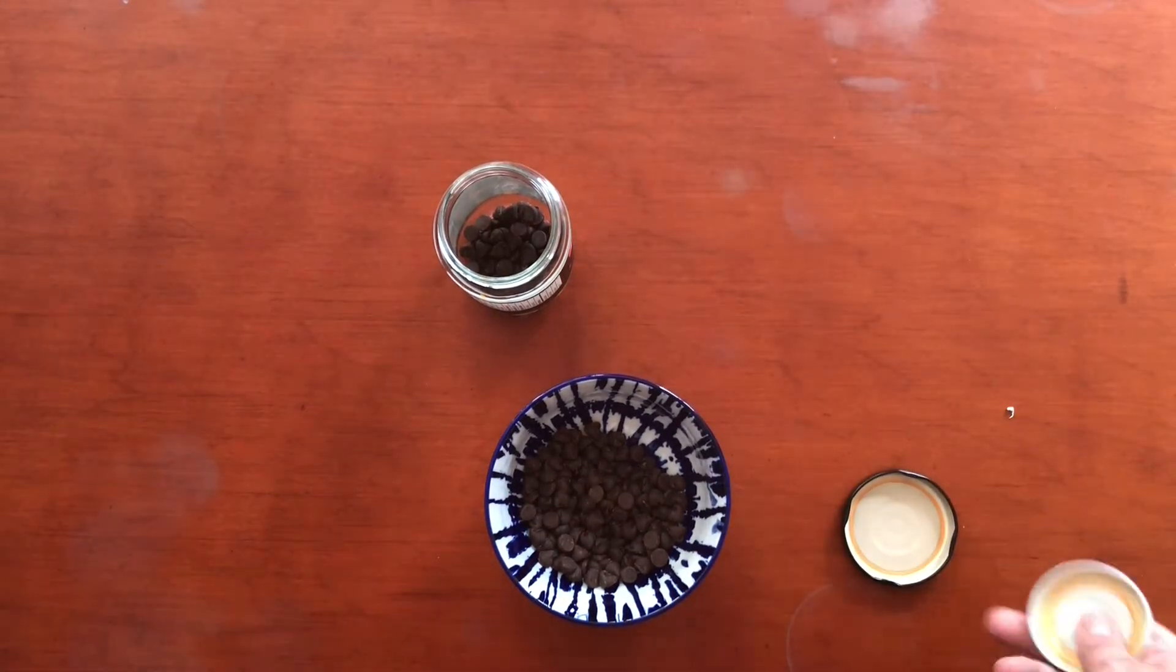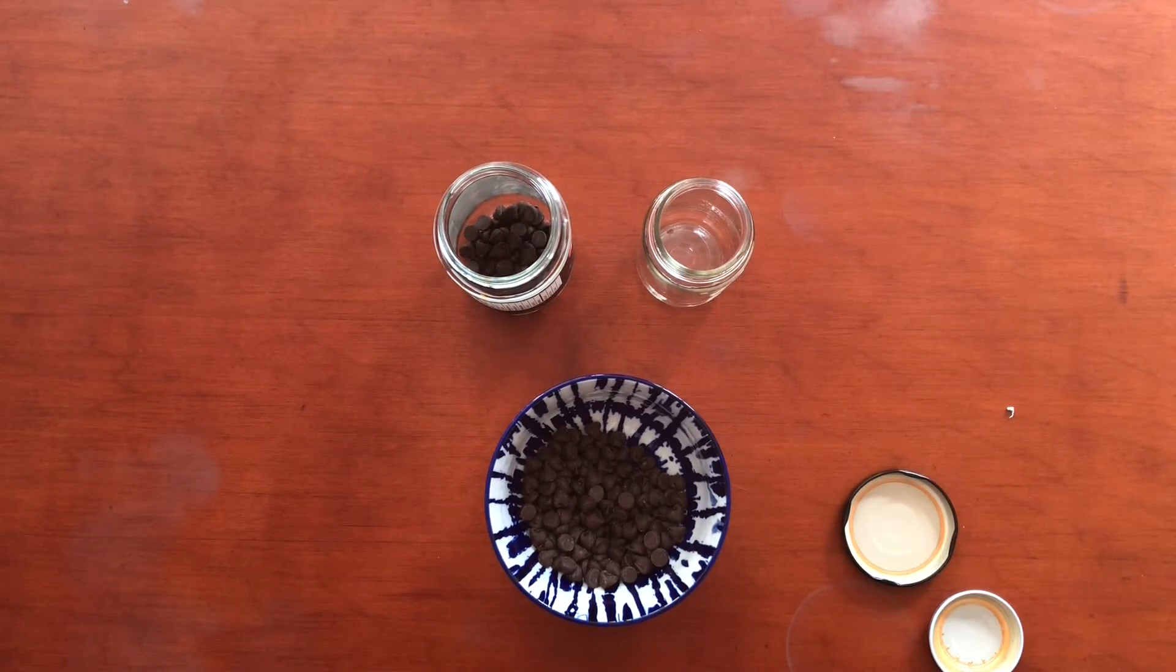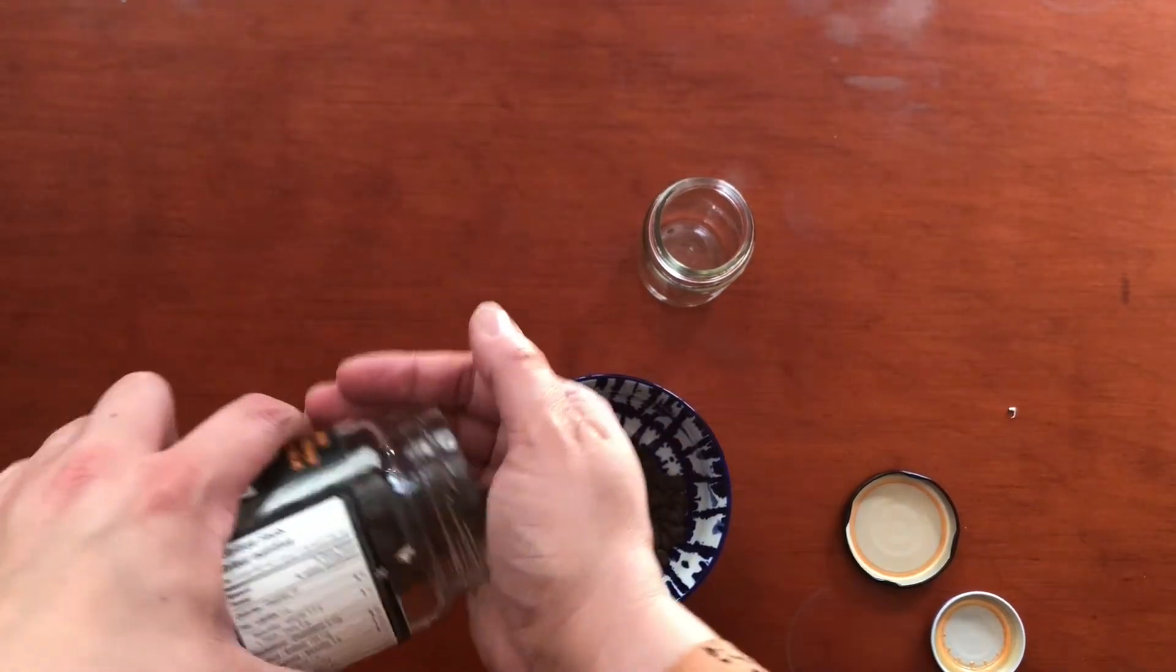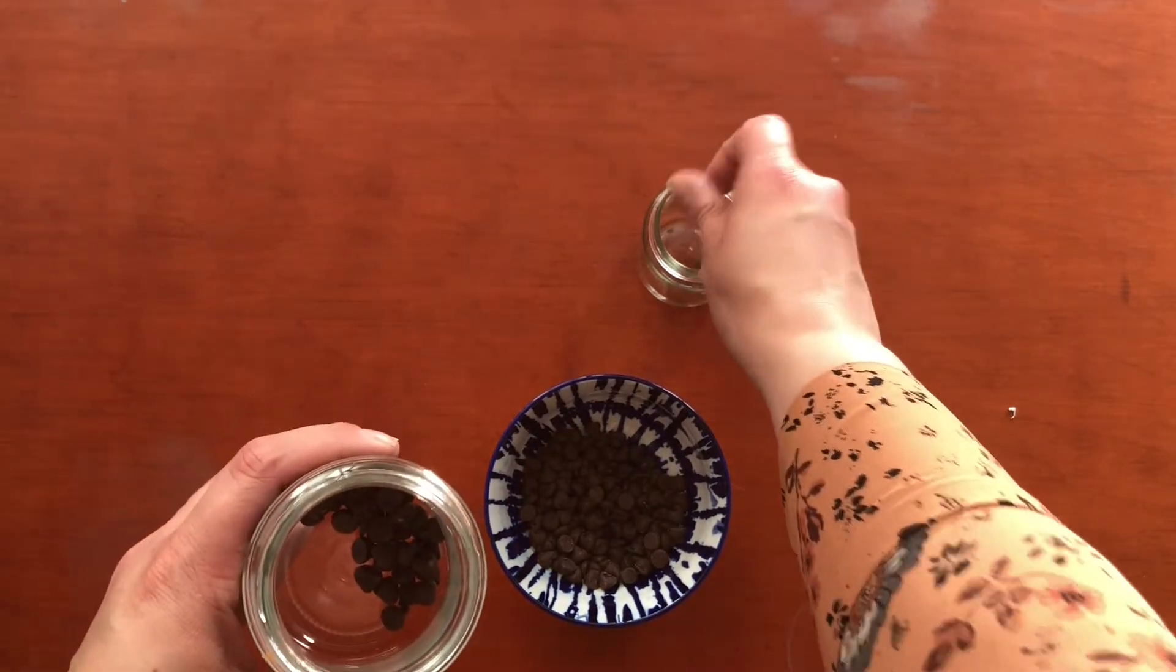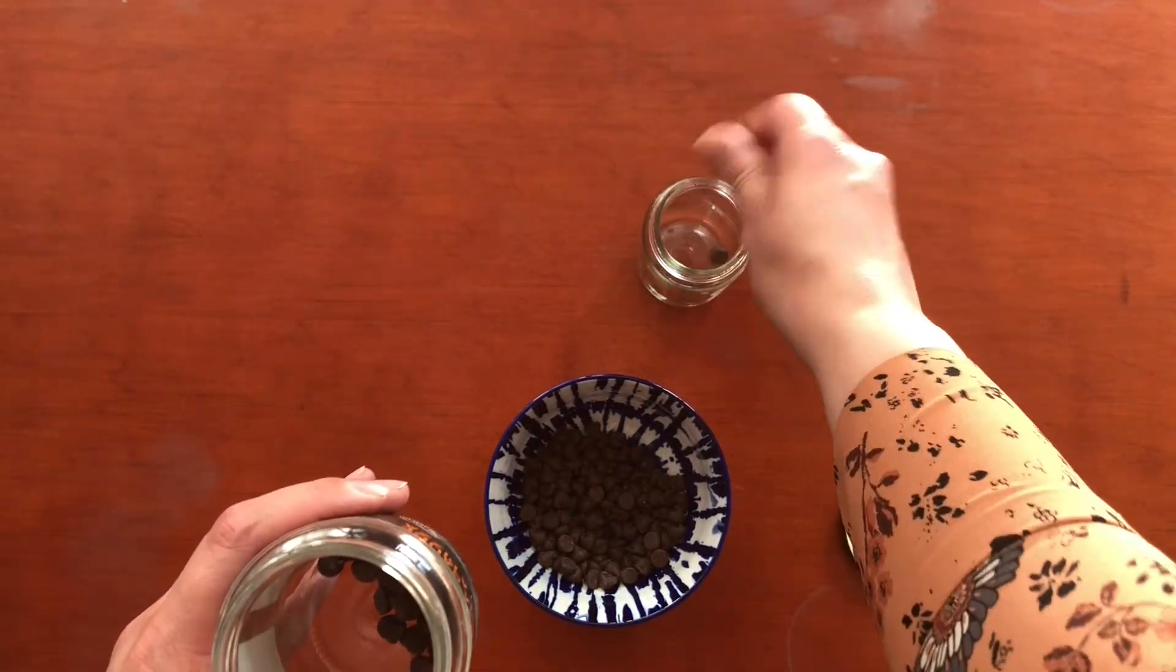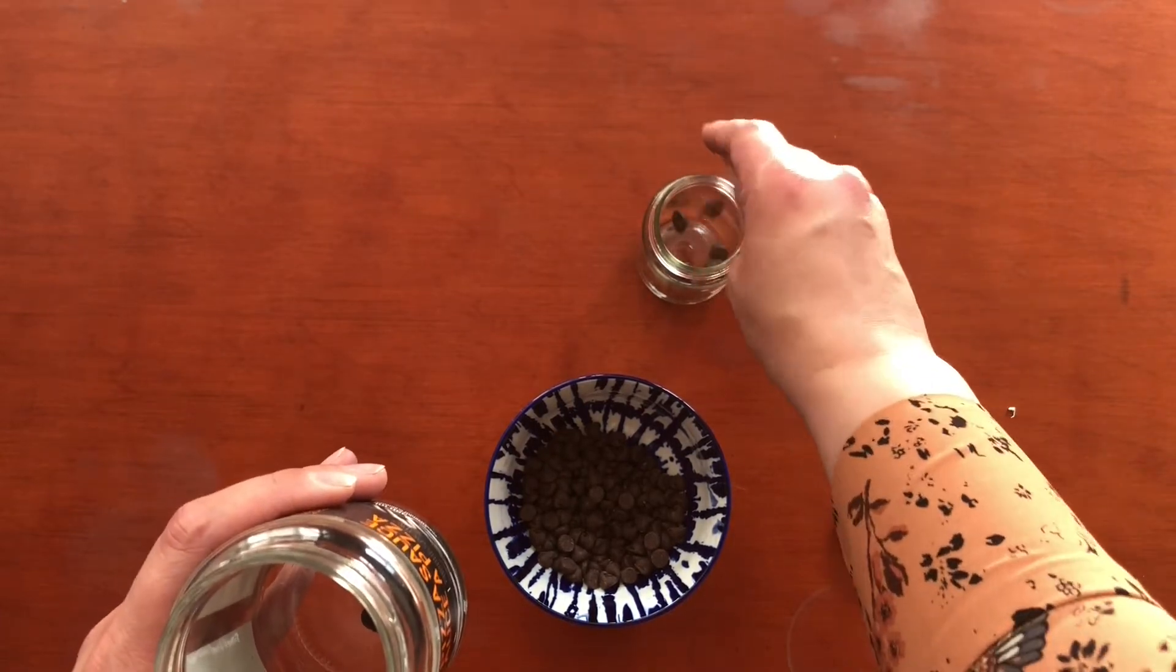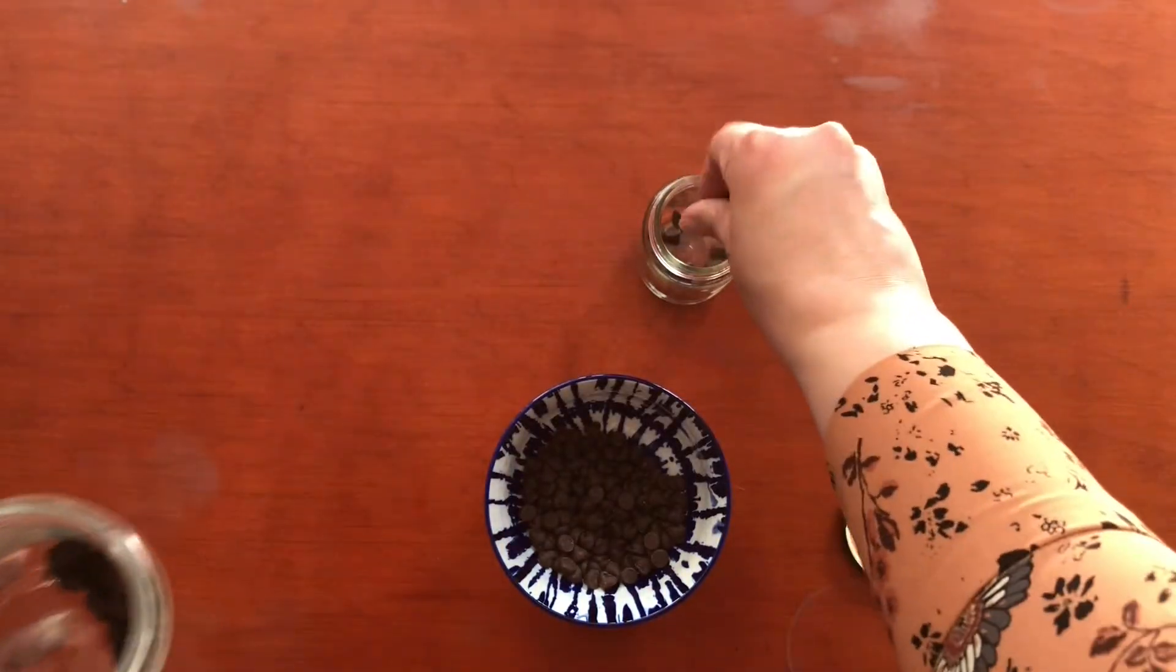But now I have to count. So as I'm filming this, we have made it to day 14 of the Omer. Oh no, I have the wrong number in my still left to count jar. So I have to move. One, two, three, four, five, six, seven, eight, nine, ten, eleven, twelve, thirteen, fourteen.